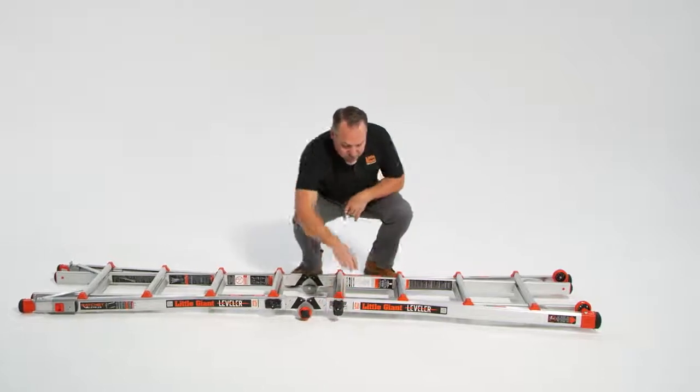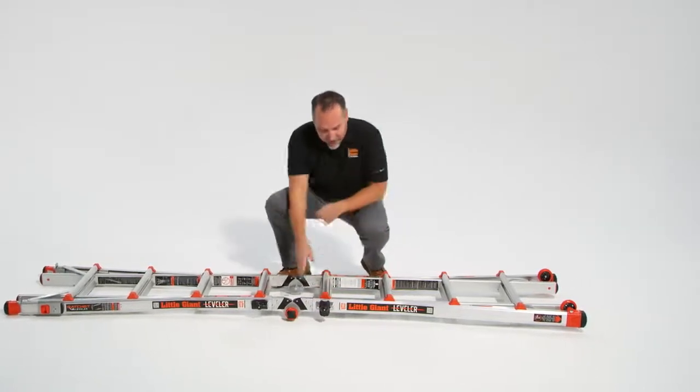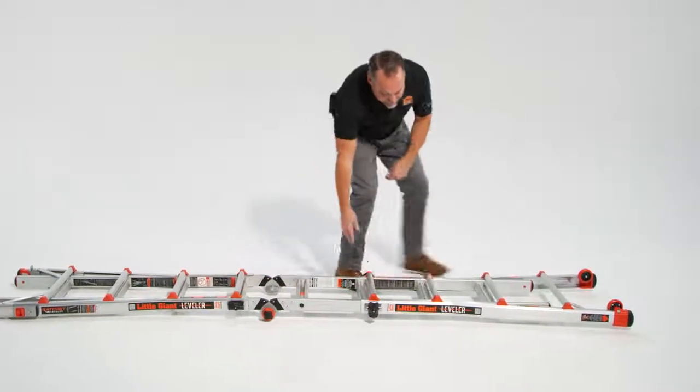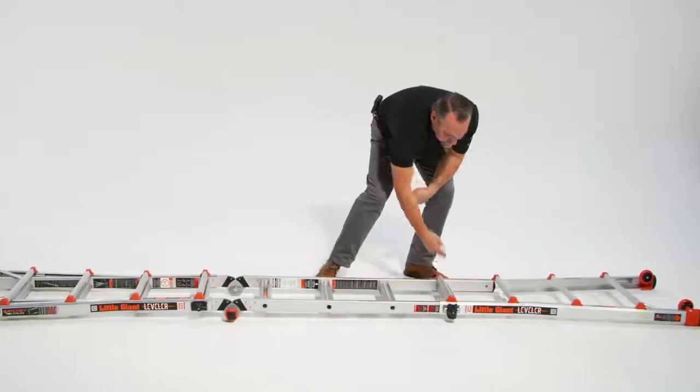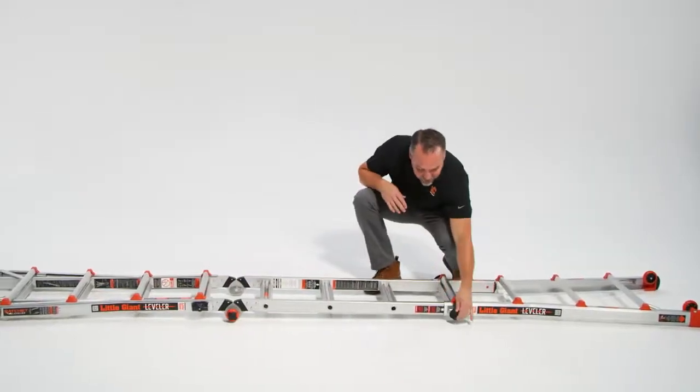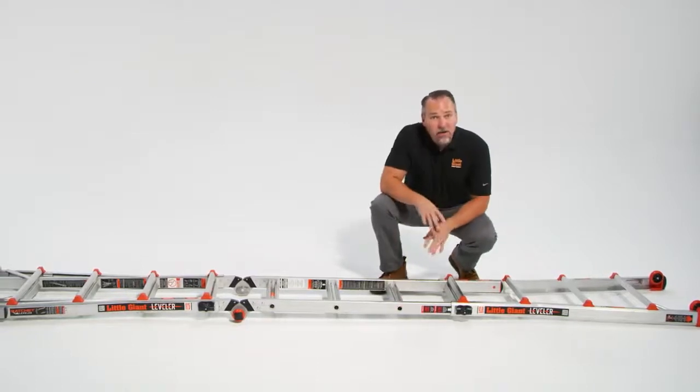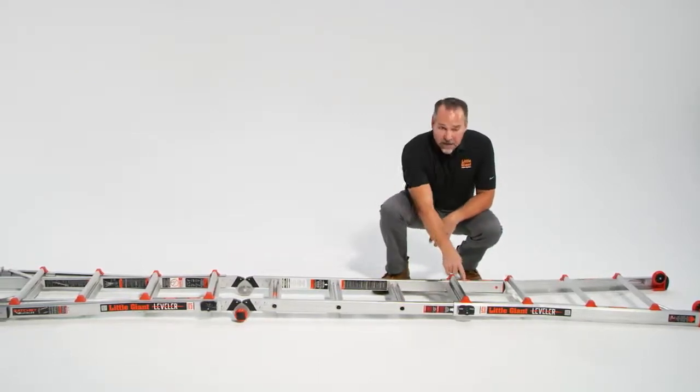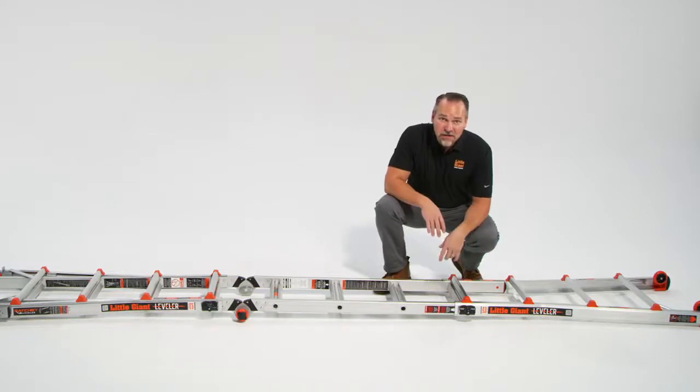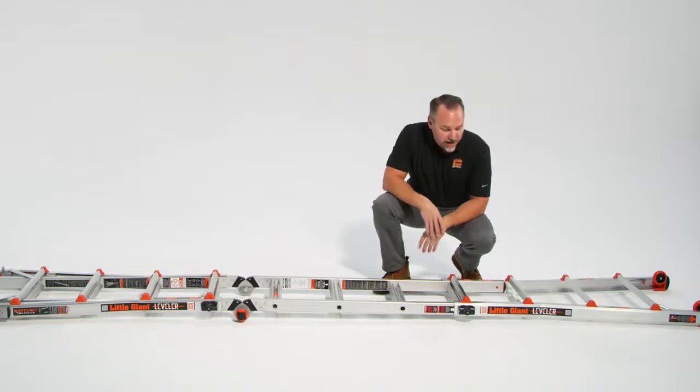Then we're going to rotate these rapid locks and extend it to be the length or the height that we're going to need to tackle the job. As long as those rapid locks are lined up with that hole, they're going to lock into place. But again, it's your responsibility to make sure that those are fully locked. We could extend the bottom half the same way to be the desired height.